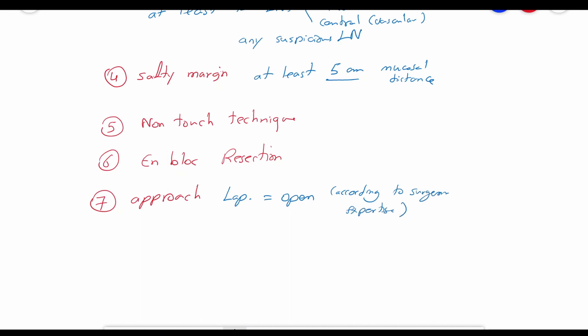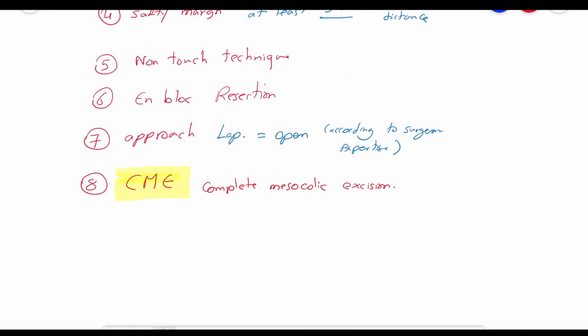Number seven is approach. Laparoscopic and open approaches are both equivalent and should be decided according to the surgeon's expertise. The last principle is following the CME or the complete mesocolic excision, which is in a way a summary of all the previous principles. It includes dissecting along the embryonal plane of the mesocolon, maximal lymph node harvesting, and central ligation of the feeding blood vessels.